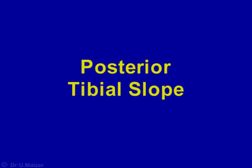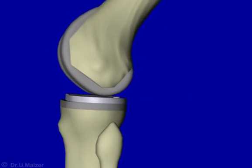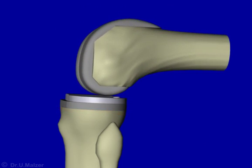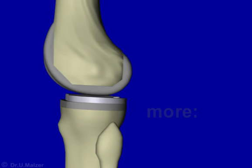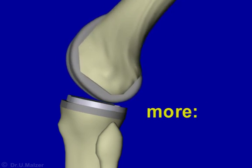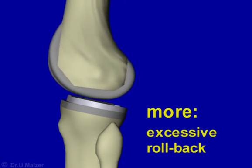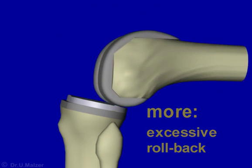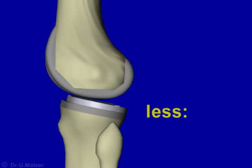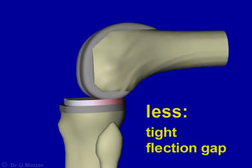The posterior slope of the tibial plateau governs the width of the flexion gap. Normally, the slope will be about five to seven degrees, and the tibial component should be inserted with the same amount of inclination. If the slope is too steep, the knee will be unstable in flexion with increased rollback of the femoral component, leading to excessive stress and increased wear of the posterior part of the insert. If the slope is not steep enough, the knee will be tight with a flexion deficit, and in this case too the polyethylene insert will be subject to increased stress.